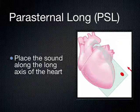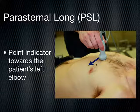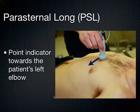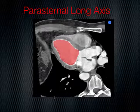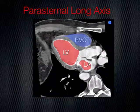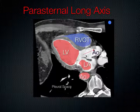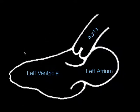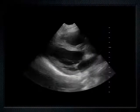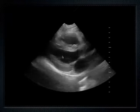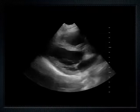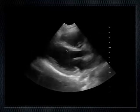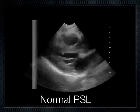For the parasternal long axis, the indicator points towards the patient's left elbow or left hip. The structures visible include the left ventricle, left atrium, right ventricular outflow tract, and aortic outflow tract. The left atrium pumps into the left ventricle and out the aortic outflow tract. You can see the mitral valve and aortic valve — two leaflets of the three are visible. The interventricular septum and posterior wall make meaningful motion towards one another, and the mitral valve nicely smacks into the septum.